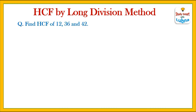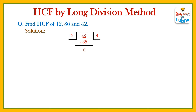Another example: find HCF of three given numbers — 12, 36, and 42. The bigger number is 42 and the smaller number is 12, so we divide 42 by 12. 12 threes are 36; subtract 36 from 42 — 6 is left. Now we divide the first divisor by the first remainder: 6 becomes the new divisor and 12 becomes the new dividend. 6 threes are 12; subtract — remainder is 0. But one more number is left, which is 36.